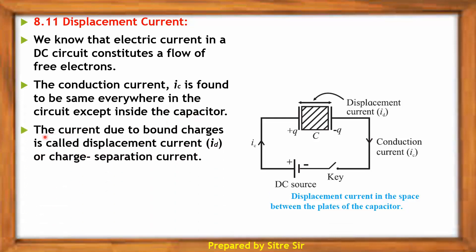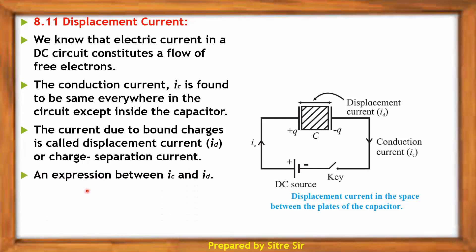The current due to bound charges is called displacement current ID, or charge separation current. We will derive an expression between IC and ID, that is conduction current and displacement current.